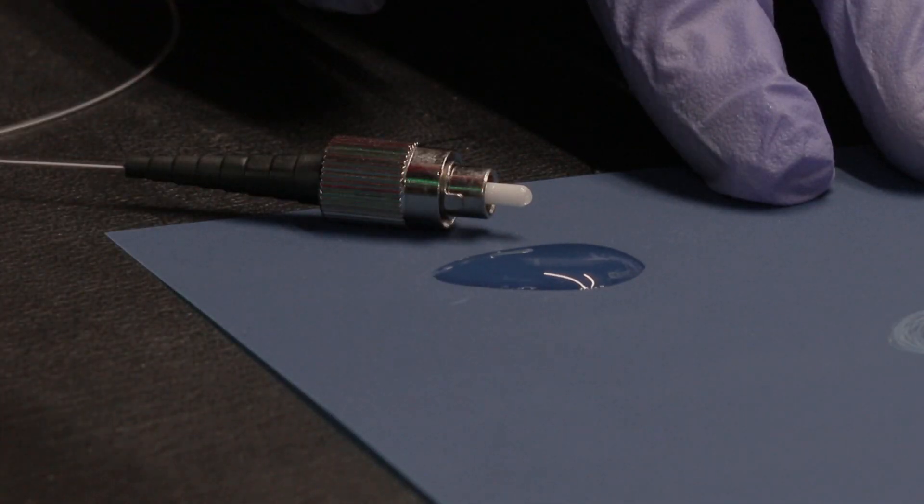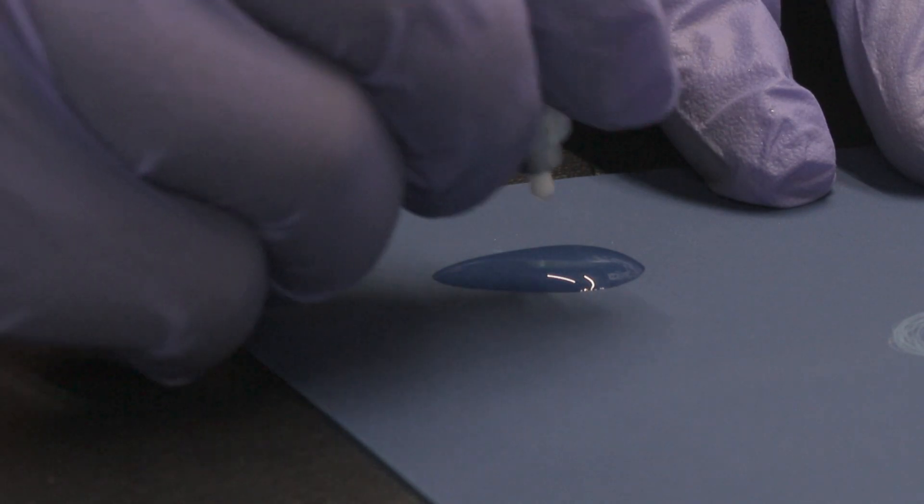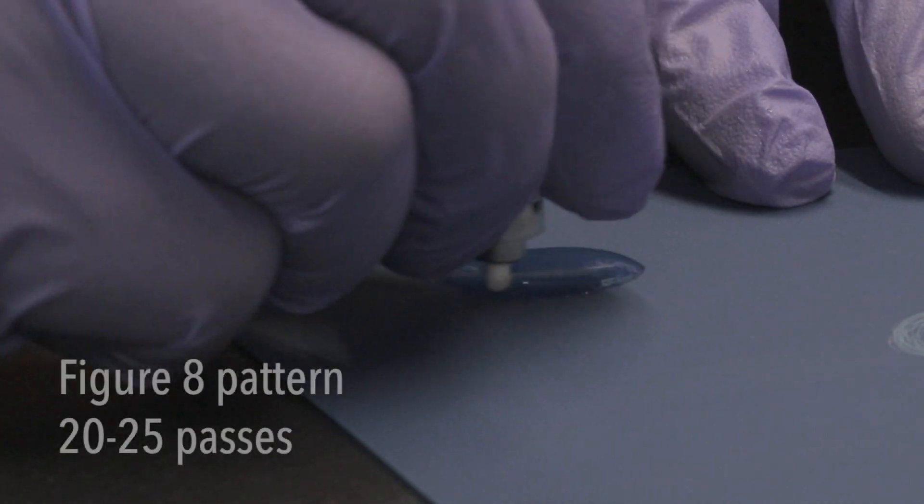Now add a little bit of water to the polishing pad and gently polish the end of the wire, being careful not to apply much pressure as it can actually break the wire.